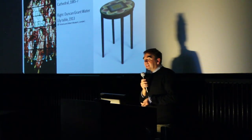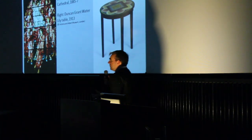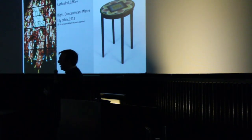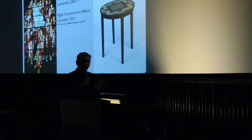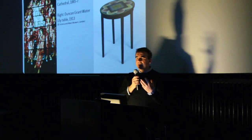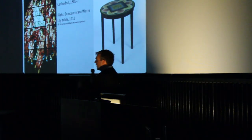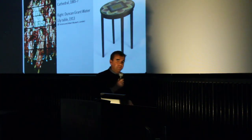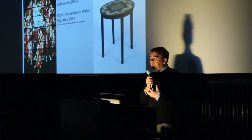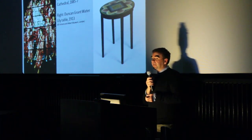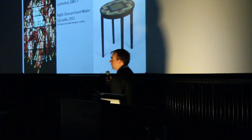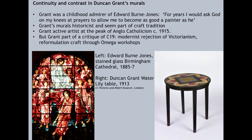Grant is also active at the peak of Anglo-Catholicism. We think of the High Church Revival within the Church of England as something much earlier, but it actually peaks around the First World War, which is very much Grant in an interesting phase of his career. This is significant because the Anglo-Catholic Revival generated commissions for a lot of ecclesiastical art. But Grant is also part of the critique of the 19th century — he's part of the modernist rejection of Victorianism, and part of the reformulation of craft through the Omega workshops. Here's an Omega table with a water-lily pattern by Duncan Grant.